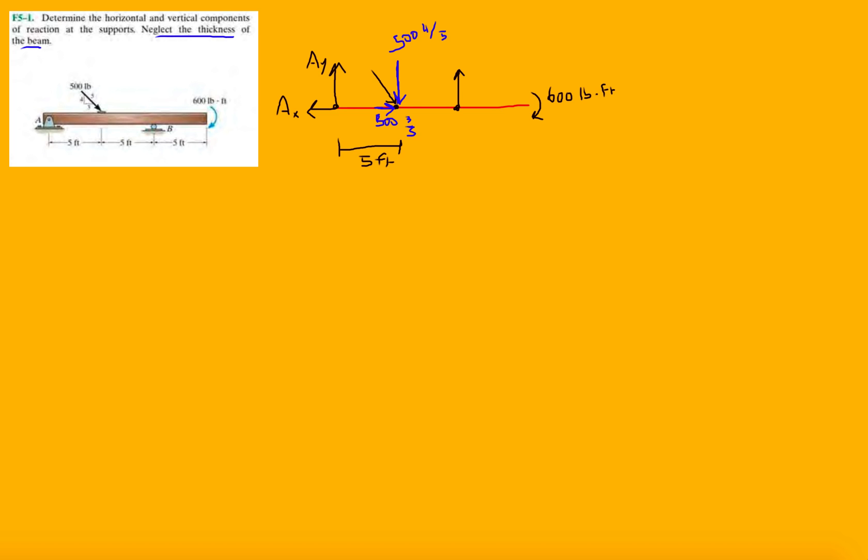And then if we got to label this one, so this was By, this was the reaction By. And now we're pretty much done with the hard part. So now we just have to find the rest of the reactions. So we have to find Ay, Ax, and By. In order to do that, all we have to do is... let's do a static equilibrium equation here.